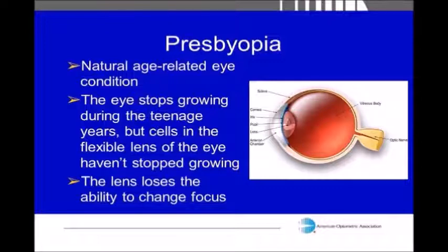These are examples of a common condition known as presbyopia. What happens is the eye is continuously growing. As we're born, our eyes are continuously developing. By our teenage years or mid 20s the eye itself has already stopped growing, but the lens fibers are continuously still growing inside the eye, and the density of these lens fibers is what causes that loss of flexibility, so we can't focus correctly.